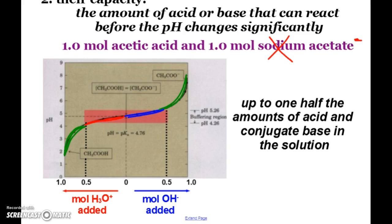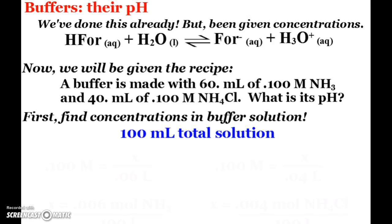And so you can see for this, up to about one-half the amounts of acid or conjugate base in solution. After about a half a mole of acid or base is added, that's where we see this buffer capacity breaking down.